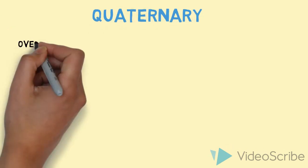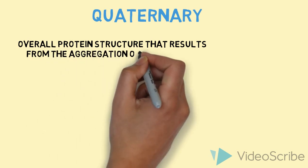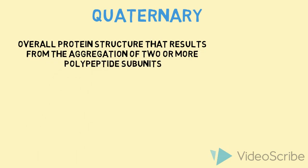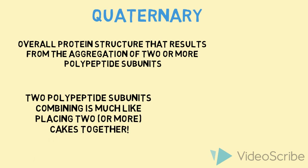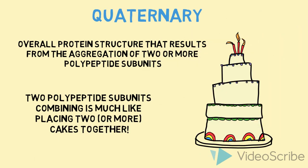Quaternary is next. Overall protein structure that results from the aggregation of two or more polypeptide subunits. The polypeptide subunits combining is much like placing two or more cakes together, as you can see in that photo where multiple cakes are placed together.